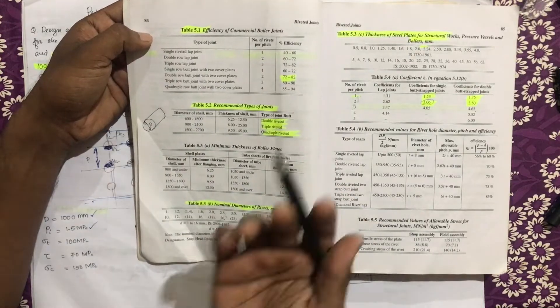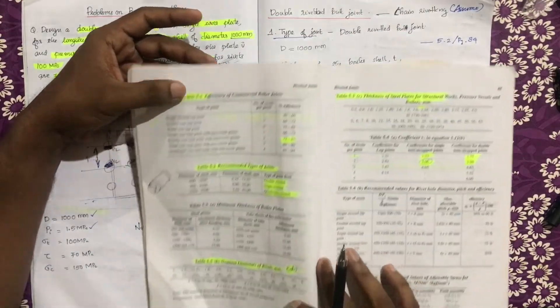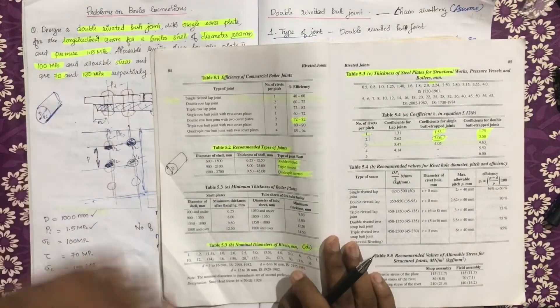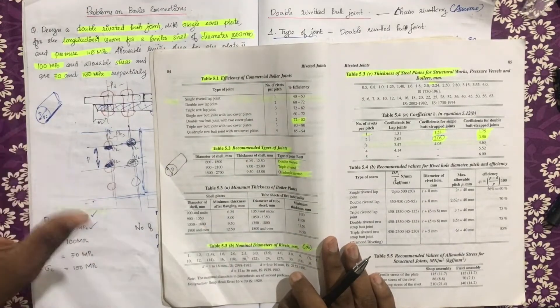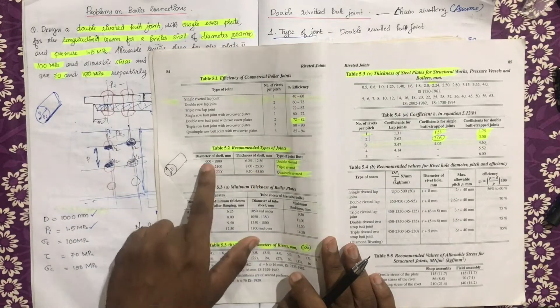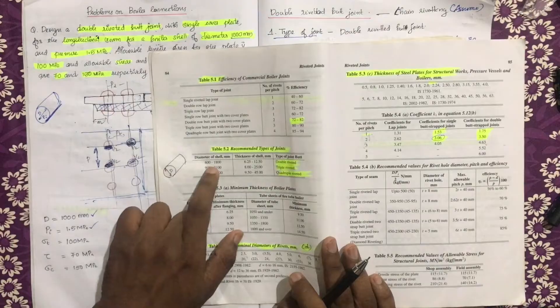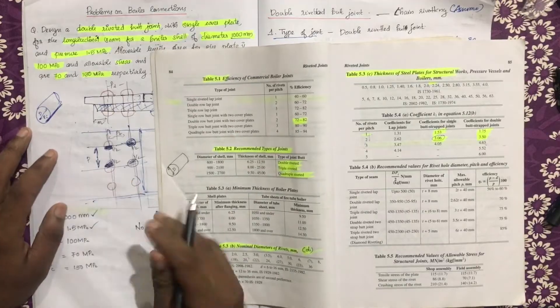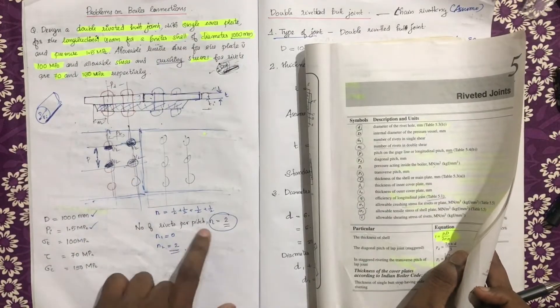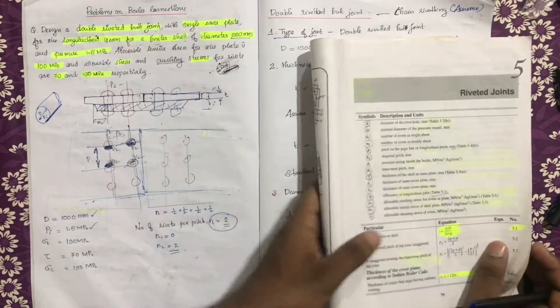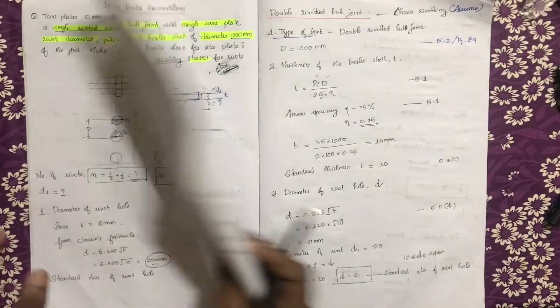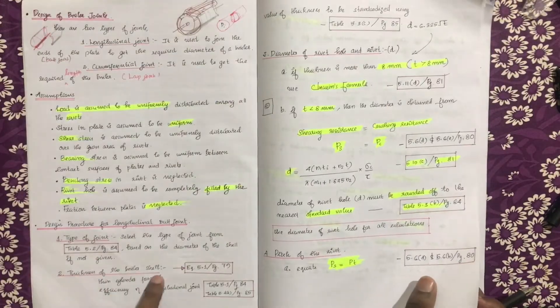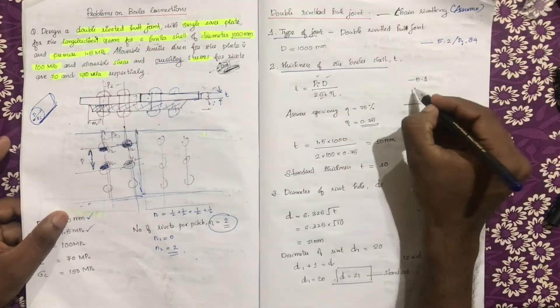This type of joint is identified for a diameter of 1000 mm and will be double riveted. The type of joint between 1-0 is the double riveted type. We need to know about the types of joints — this is the five-row side type. The thickness of the boiler shell is referenced in equation 5.1.